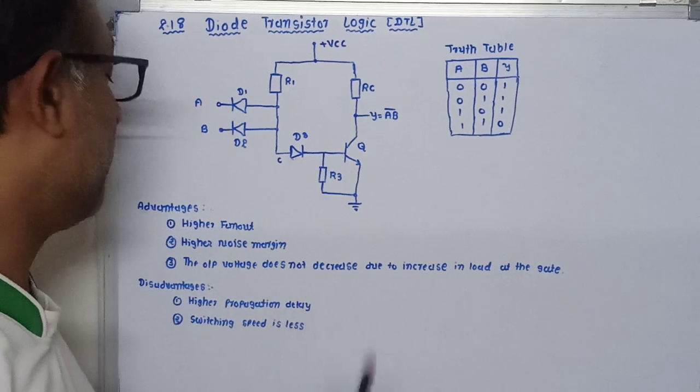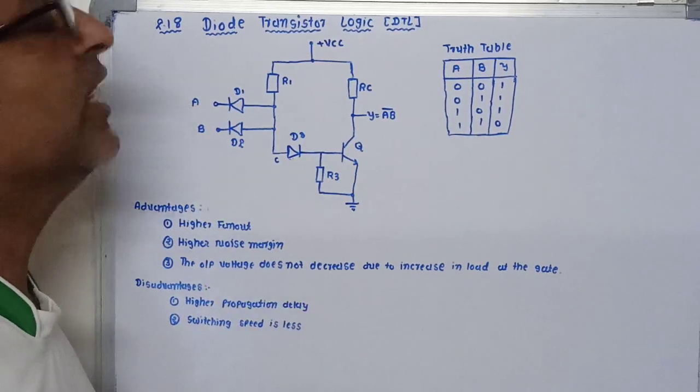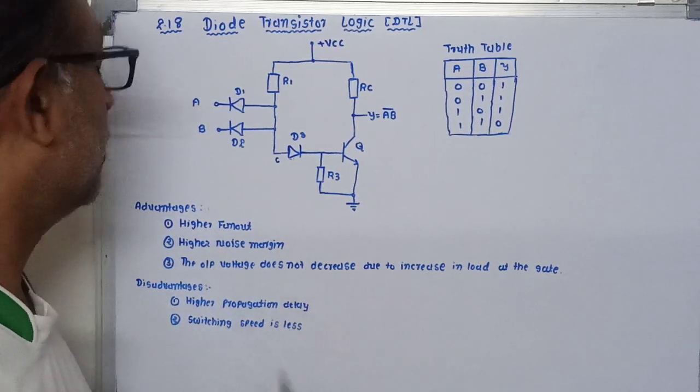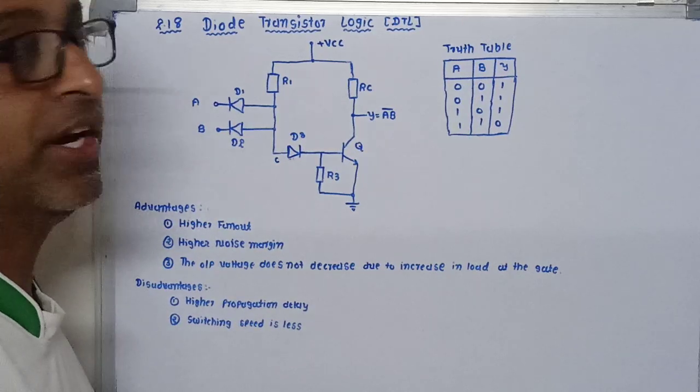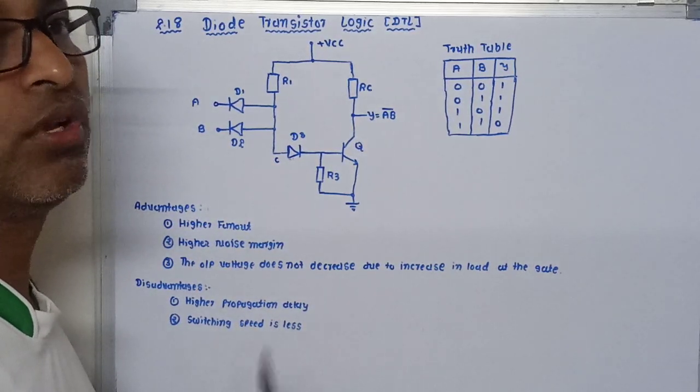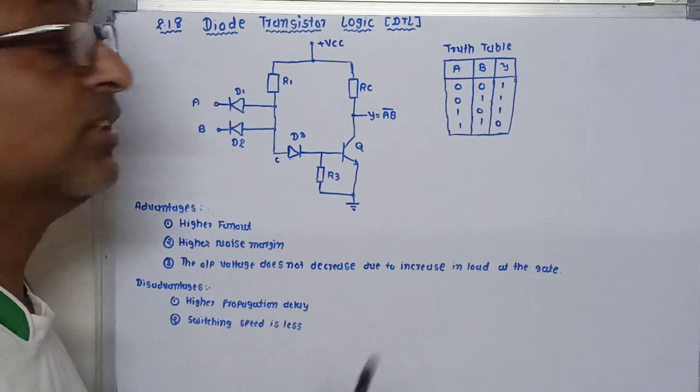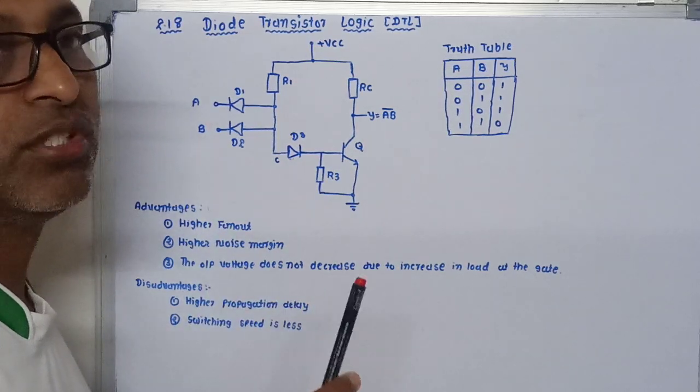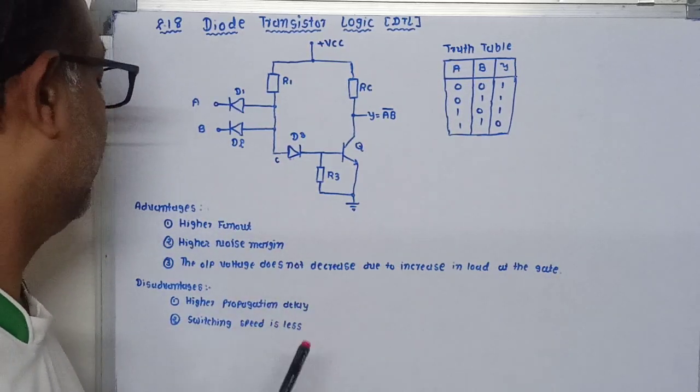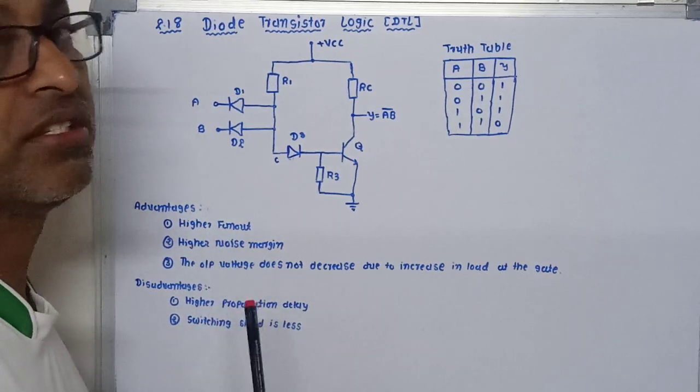Now let me see the advantages of this DTL logic. First, higher fan out. We can drive many numbers of gates by using this particular gate. Second, higher noise margin.